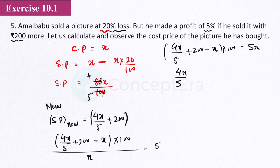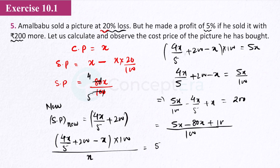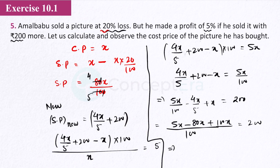Rearranging: 5x/100 minus 4x/5 plus x equals 200. Multiplying through by 100: 5x minus 80x plus 100x equals 200 times 100. This gives 25x divided by 100 equals 200, so 25x equals 20,000, therefore x equals 800. The cost price is 800 rupees.